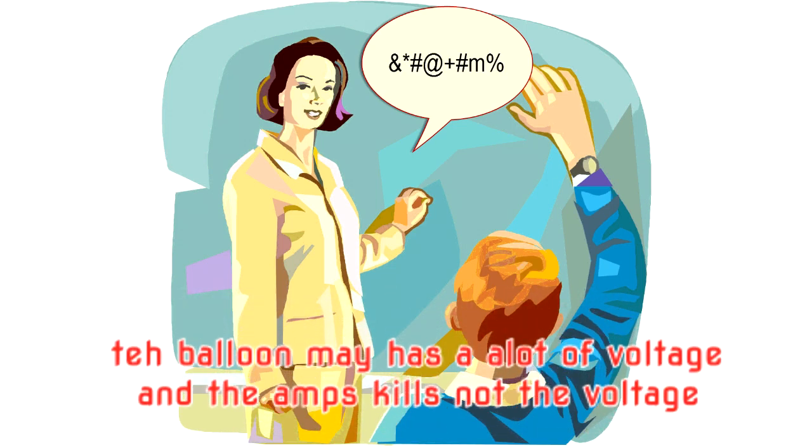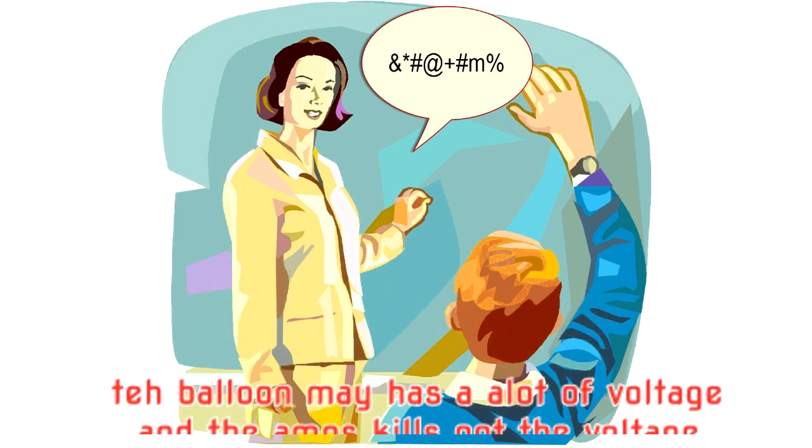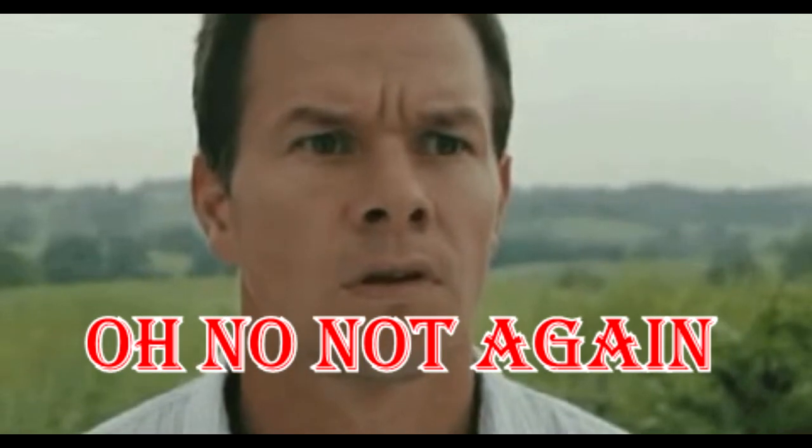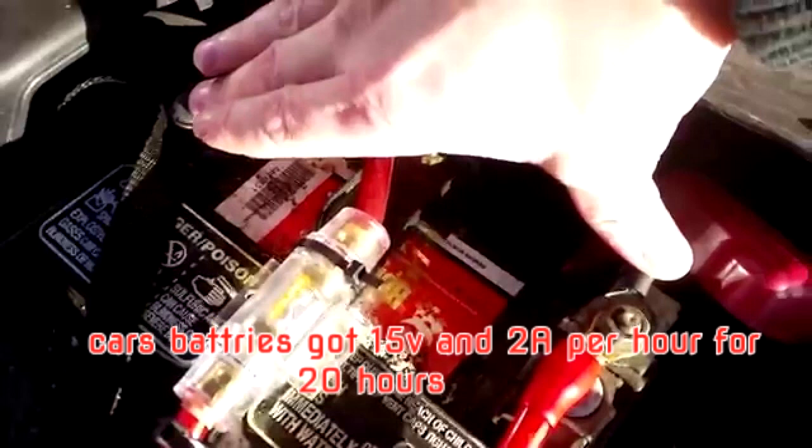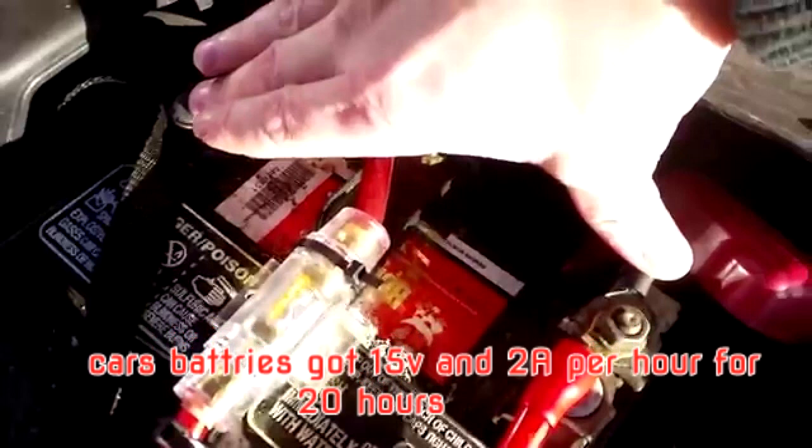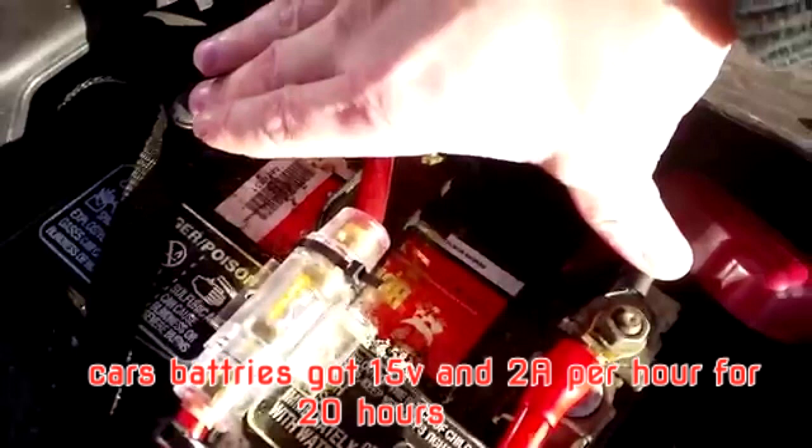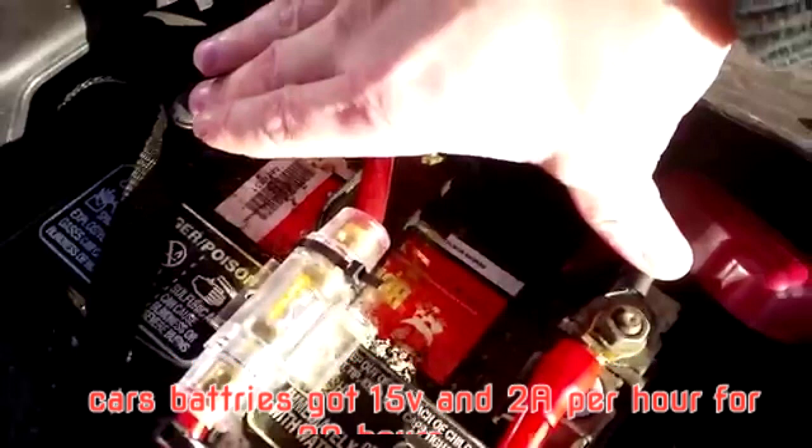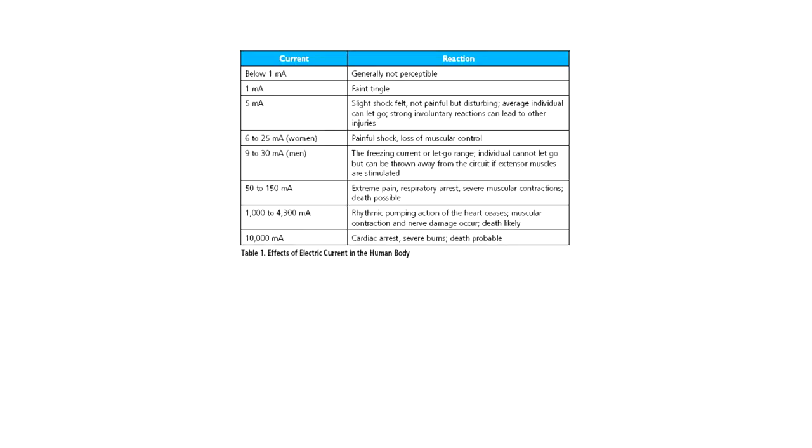You will ask yourself how is that possible. Here the teacher will say the balloon may have a lot of voltage, but the amps kill, not the voltage. On the other hand, you may get confused when you touch both anode and cathode of your car's battery and still nothing happens, and you know that car's battery has low voltage and high flowing current. Well yeah, it's the amps which kill, but under conditions.